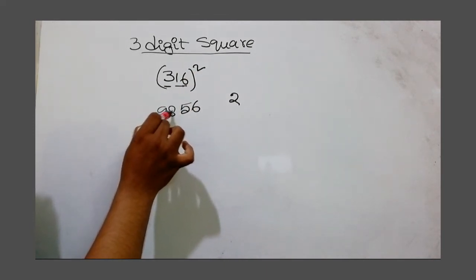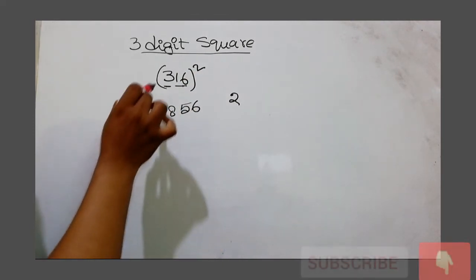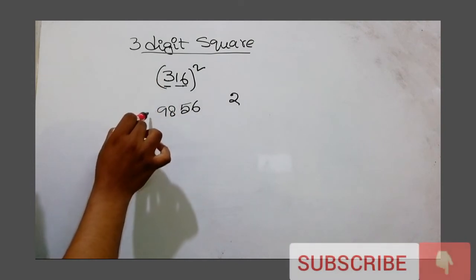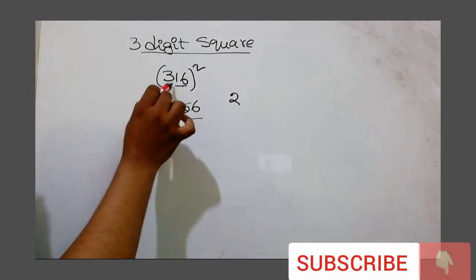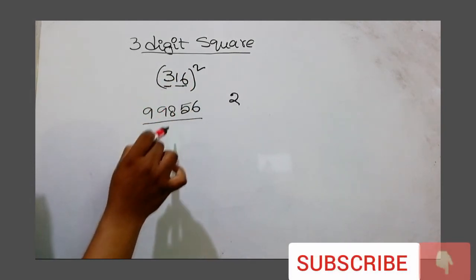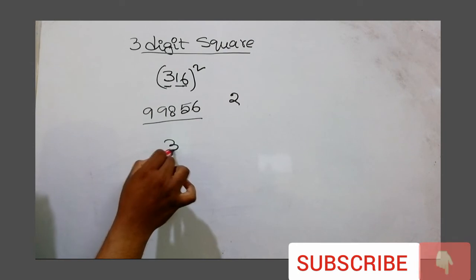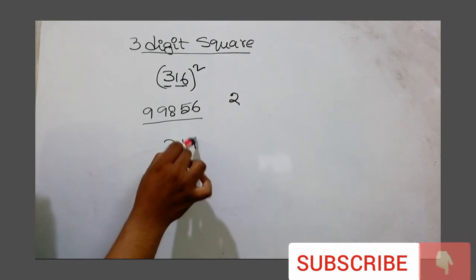98. 3 square. So, this square number is 3 square number.